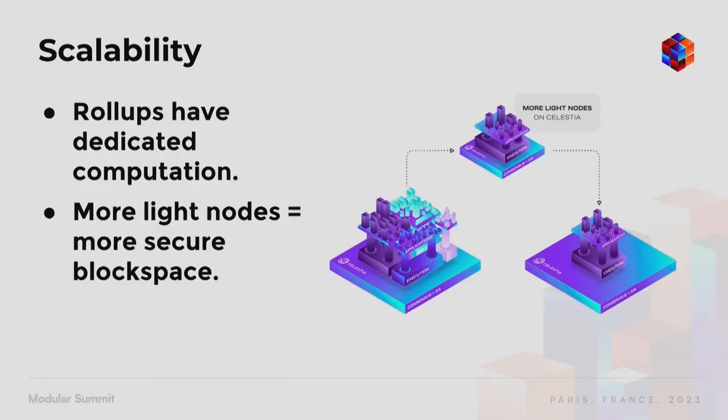What are the benefits of modularity? The first one is obviously scalability, for several reasons. Users don't have to execute the transactions of every other user. Because roll-ups have their own execution environment, they have their own dedicated computation resources. If you spin up a roll-up, it has its own computational resources — so even if another roll-up gets busy or has high computational requirements, that's not going to affect every other roll-up in the system.